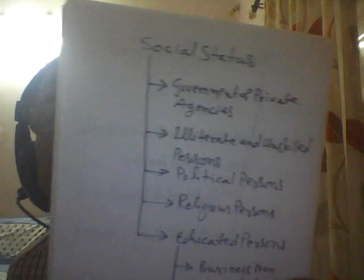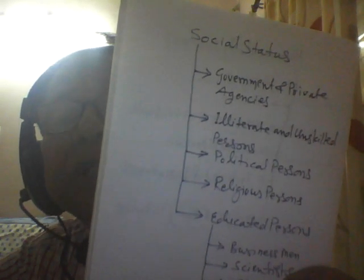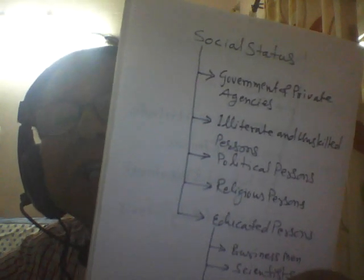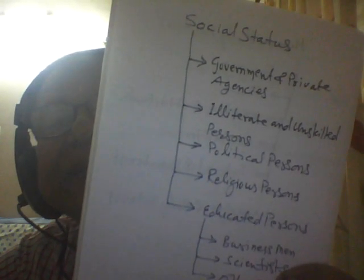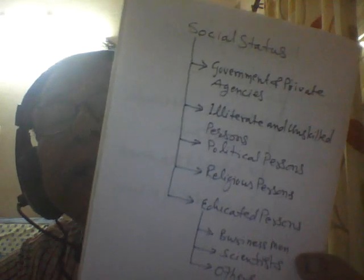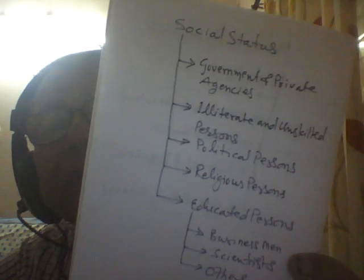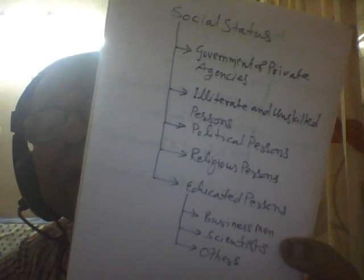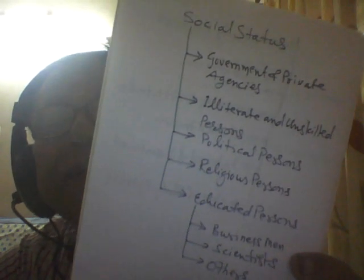Now, social status — how it affects our communication. Social status refers to communication among rich society, poor society, middle class society, illiterate persons, and educated persons. I classify it as social literacy, where communication is done among government agencies. There are norms to follow in communication; if norms are not followed properly, communication is affected. Illiterate and unskilled persons may not communicate in a proper way — illiterate and unskilled persons affect our communication.